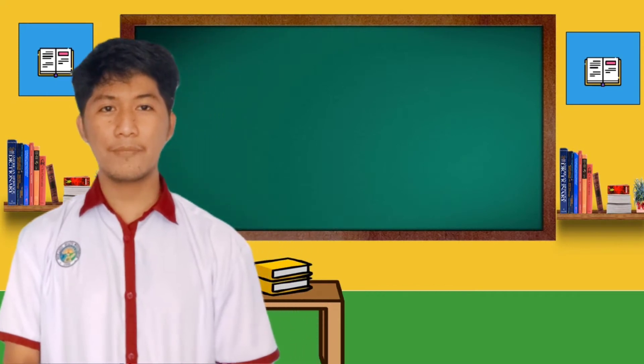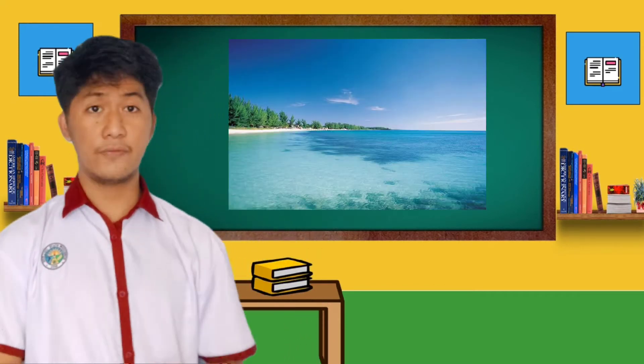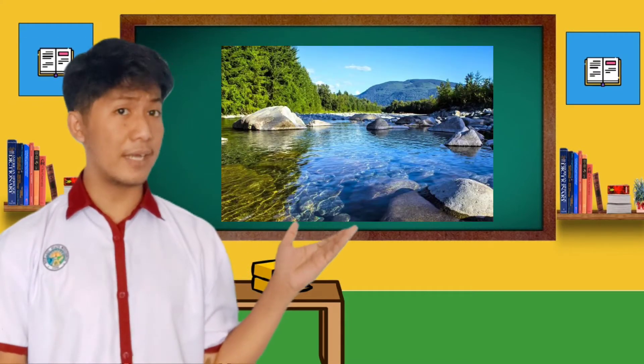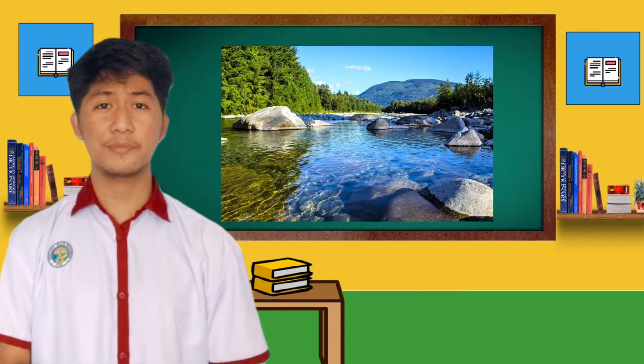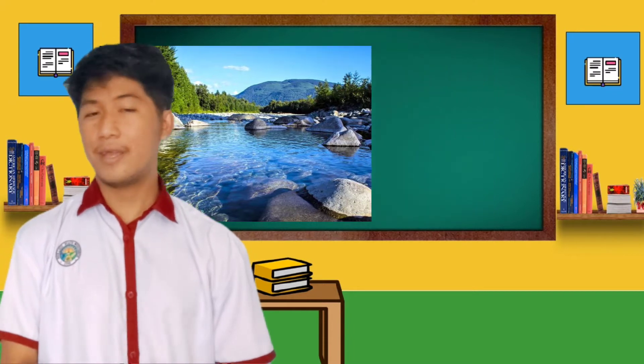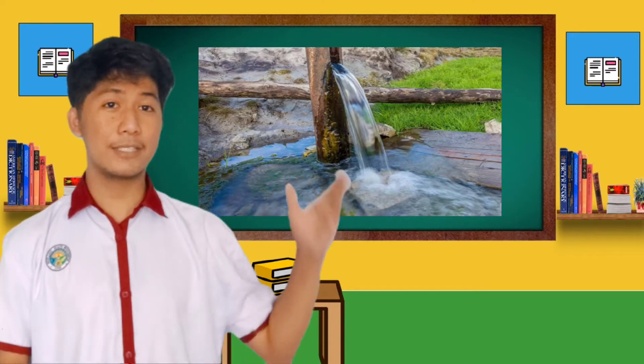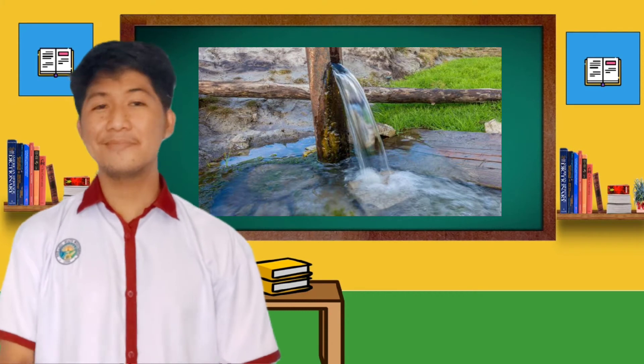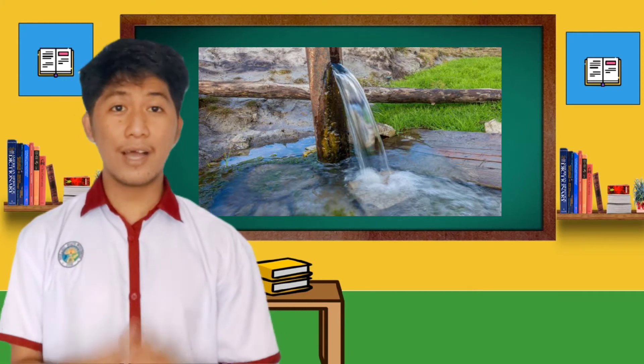Now, I will show you pictures of the three sources of water and you will have to tell me what source it is. Is that clear everyone? Okay, what can you say about the first picture? That is correct! It is sea water. And how about the next picture? Alright, it is fresh water. And how about this last picture? Nice job! It is groundwater.